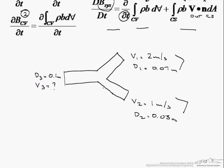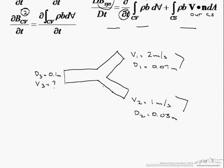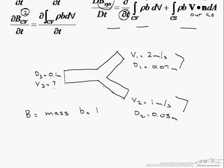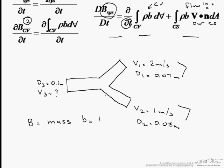So if we look at our governing equation the first thing that we see is that in this particular problem since it is a conservation of mass problem our big B is going to equal mass which makes the intensive property that is associated with mass 1. So if you look at the change in mass of the system with respect to time that has to equal 0.